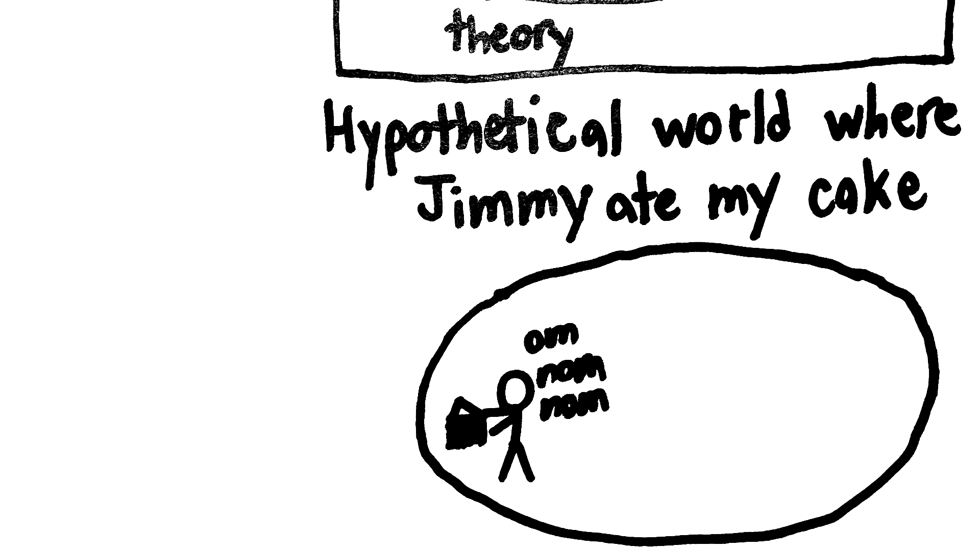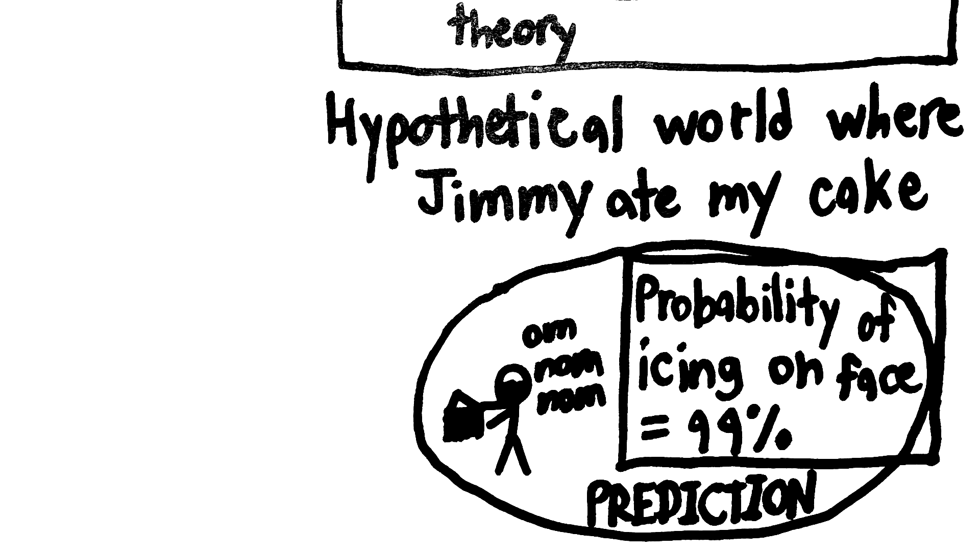Now we ask, how probable is it that Jimmy would have icing on his face? Let's say there's only a 1% chance that Jimmy would remember to wash his face because he's pretty forgetful, so there's a 99% chance that Jimmy would have chocolate icing on his face if my theory was true.